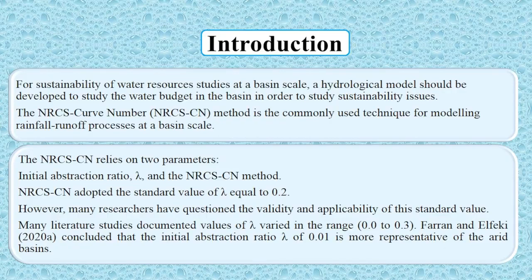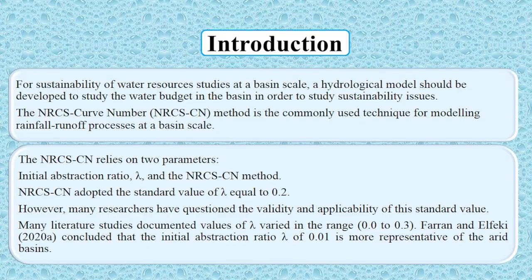The NRCS CN method relies on two parameters: the abstraction ratio lambda and the curve number (NRCS CN). These two parameters are the main concern in modeling rainfall-runoff processes at a catchment scale. The common value for lambda is 0.2, which we'll discuss later. However, many researchers have shown that this parameter could vary between 0 and 0.3, as shown in some recent studies from 2020.